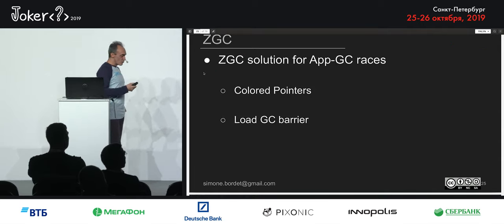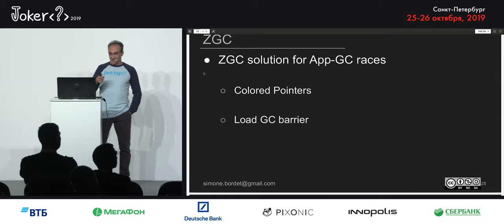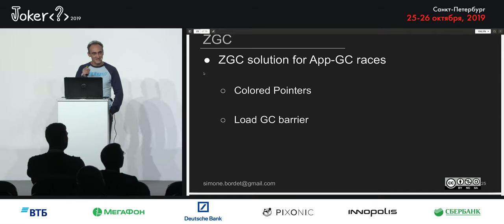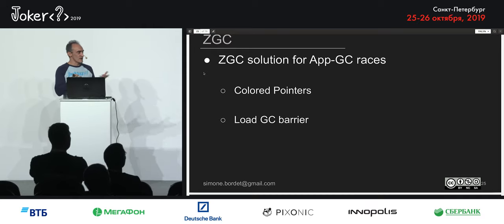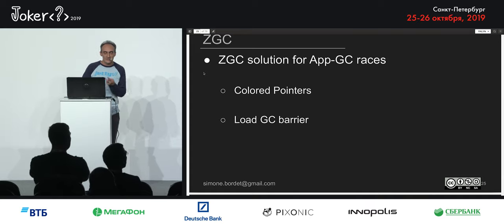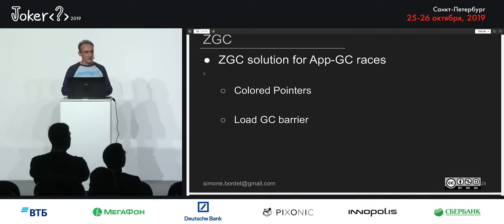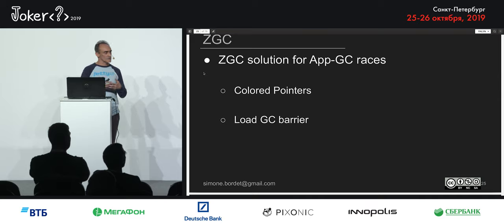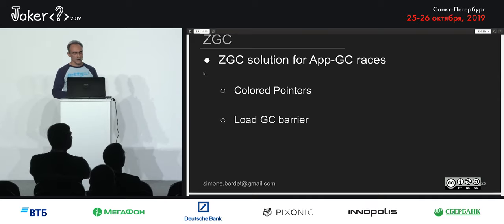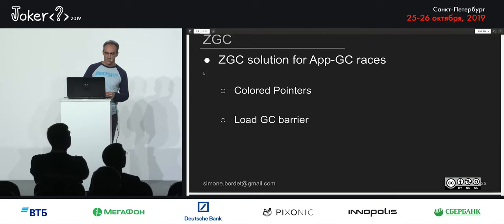Now that we know how ZGC works, we still don't know the technical detail ZGC uses to fix the race condition with the application. It uses two techniques: colored pointers and a load GC barrier. These two work together to solve the concurrency problem.